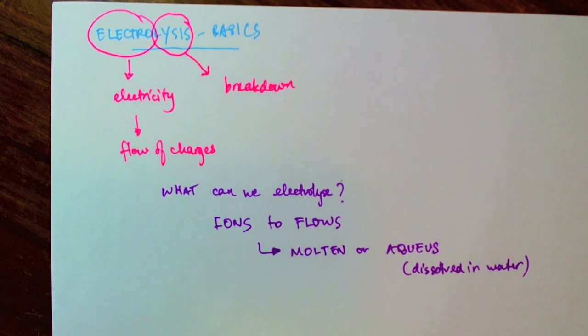So, a solid ionic lattice wouldn't work because in a solid lattice, the ions are fixed in place, and hence they cannot flow. So, we need molten or aqueous ionic substances.